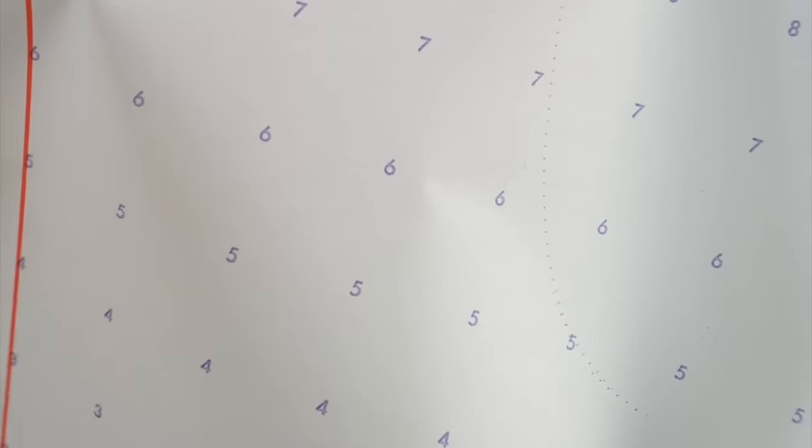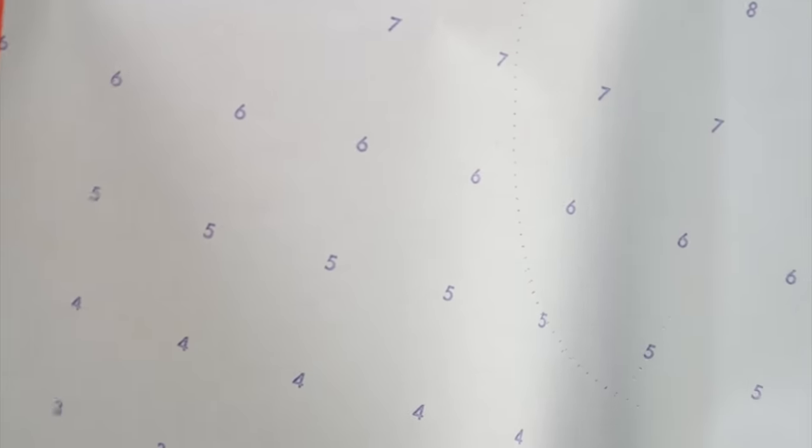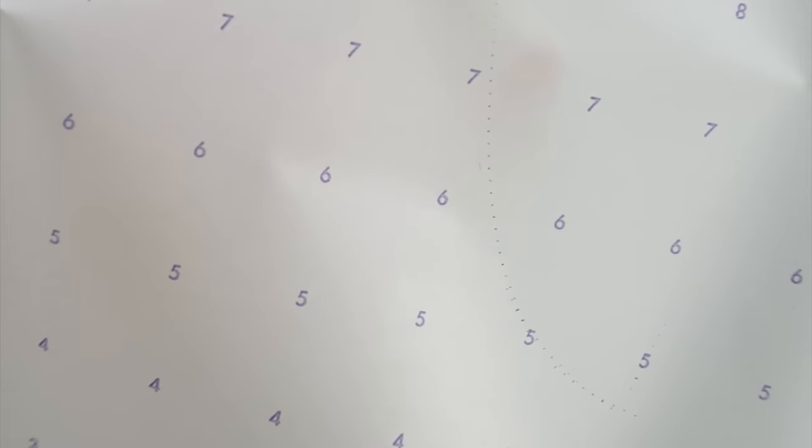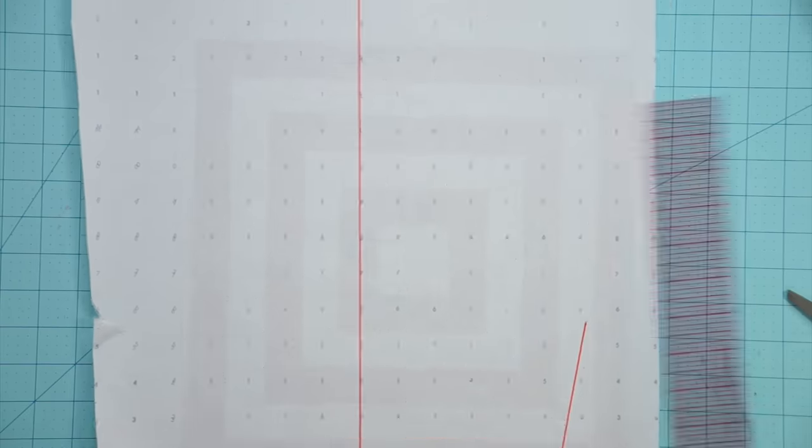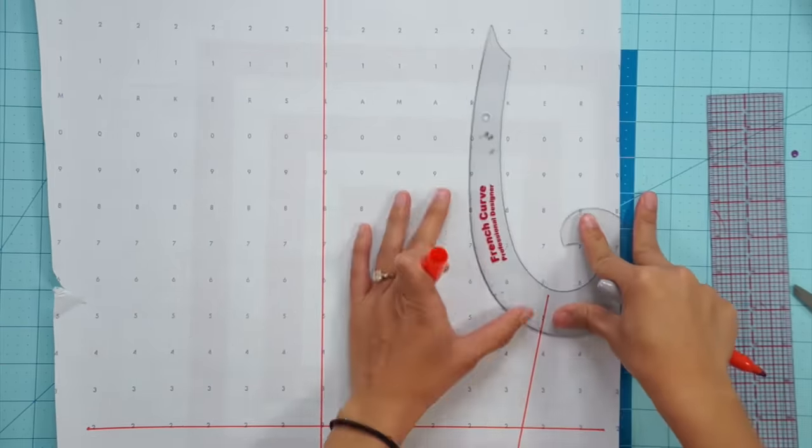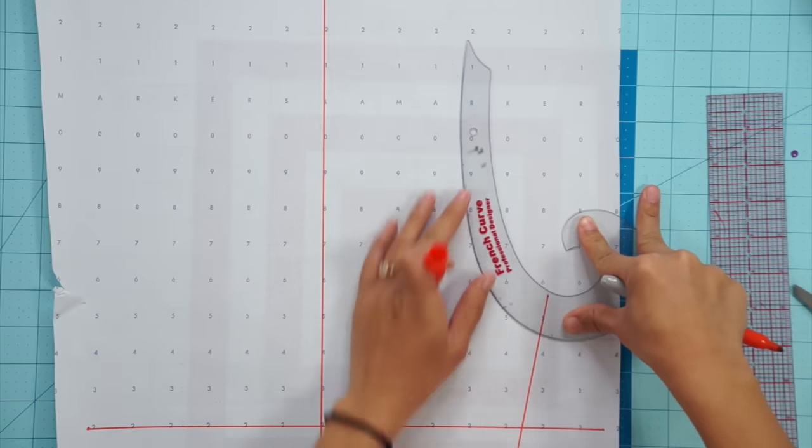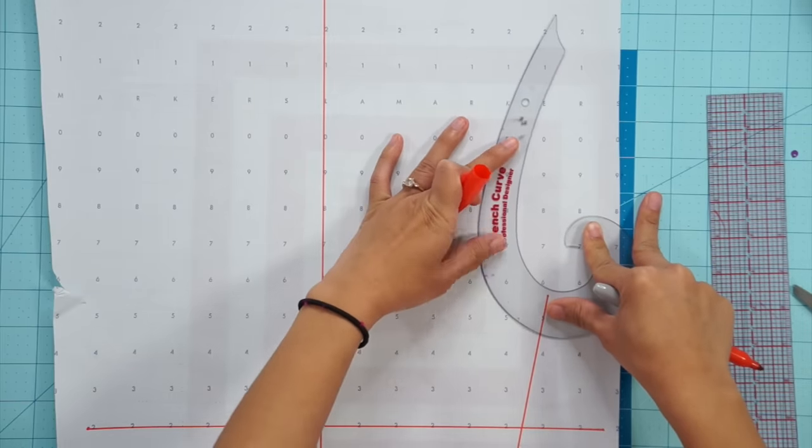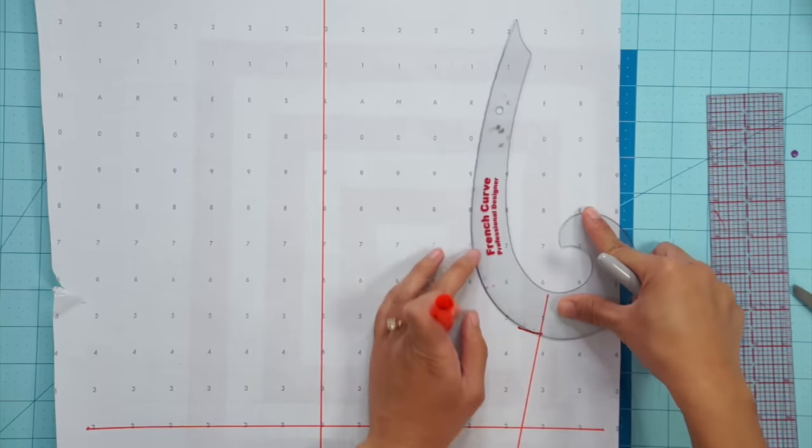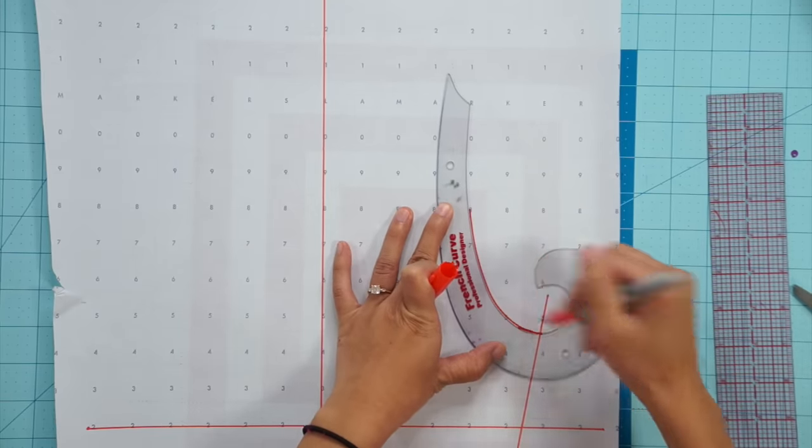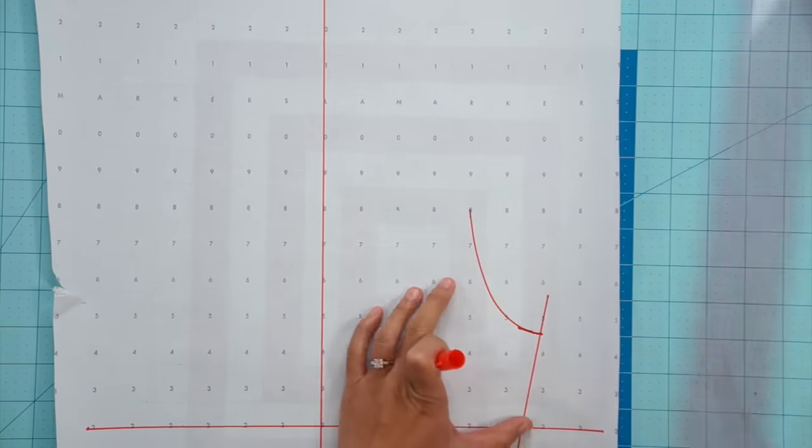Now that your tracing wheel created a guideline to follow you can grab your rulers and markers and trace over those holes. For the corners I usually like to create a 90 degree angle so when the seams connect it's straight and it's not at an angle. Sometimes your pattern won't need it to be a perfect corner and that's okay as well. Like I said we will be creating samples to test out our pattern anyways so it's not a big deal.